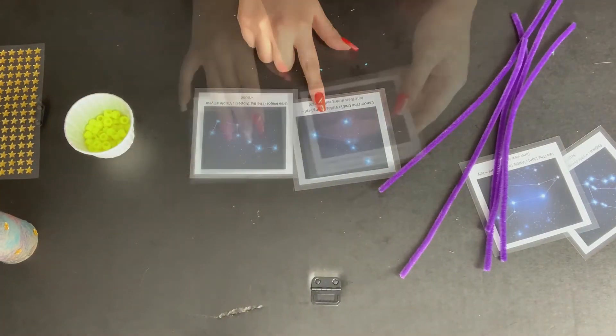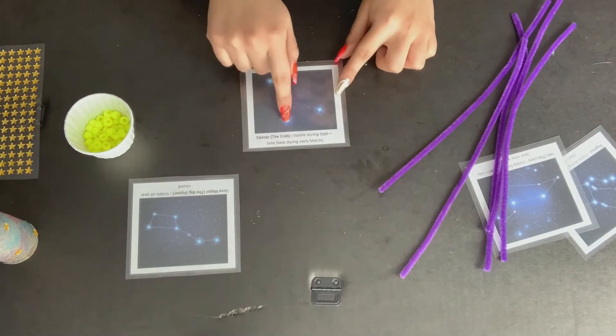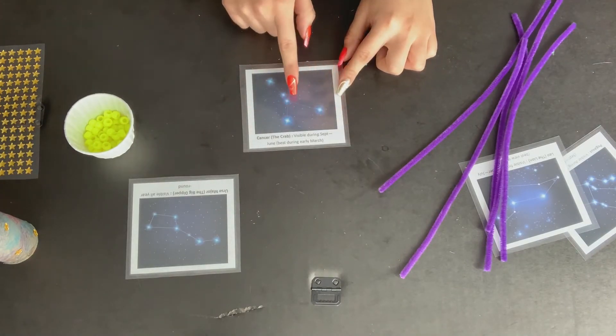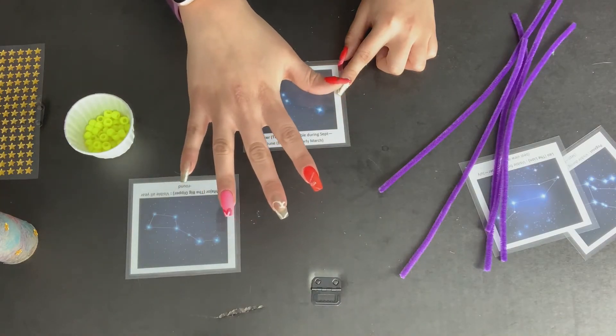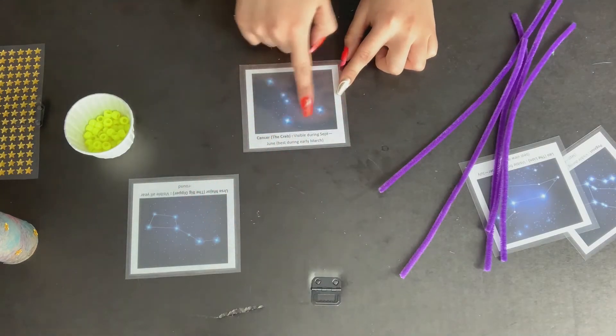To start with the Crab, let's take a look. We have one, two, three, four, five stars that are connected throughout this constellation.